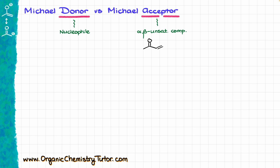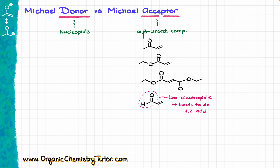We can have a conjugated ketone, a conjugated ester, or even diesters. Probably the only exception is conjugated aldehydes — the aldehyde functional group itself is a little too electrophilic, so aldehydes tend to do the 1,2-addition regardless of which nucleophile you throw at it. But ketones and carboxylic acid derivatives like esters, amides, and nitriles — all of that is fair game.